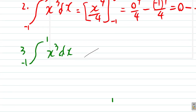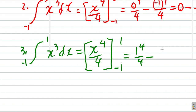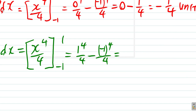Now we have the integral from negative 1 to 1 of x cubed dx. We have x to the 4th over 4, evaluated from negative 1 to 1. We substitute the upper boundary 1: 1 to the 4th over 4, minus the lower boundary negative 1: negative 1 to the 4th over 4. That equals one quarter minus one quarter, which equals 0 unit squared.